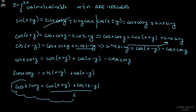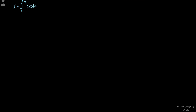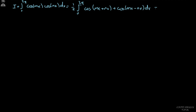Dividing both sides by 2: cosine x cosine y = [cosine(x+y) + cosine(x−y)] / 2. We now use this as our substitution into the original integral. Our integral becomes one-half times the integral from 0 to 2π of [cosine((m+n)x) + cosine((m−n)x)] dx.